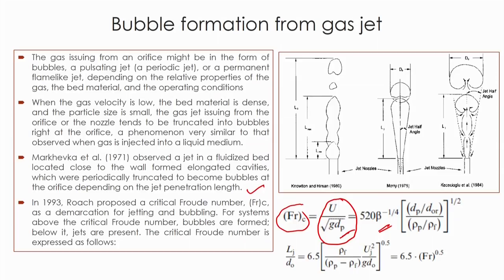The critical Froude number is: Fr_c = 520 × β^(−1/4) × (dp/dor) × (ρp/ρf)^(1/2), where dp is particle diameter, dor is orifice diameter, ρp is particle density, and ρf is fluid density. Bubble formation depends on the jet penetration length, which depends on operating conditions including fluid density, particle density, orifice hole diameter, and jet velocity.